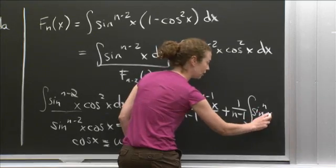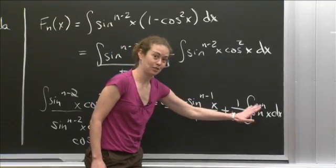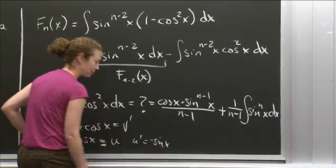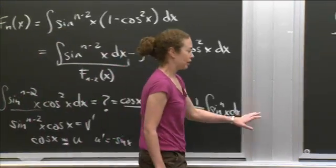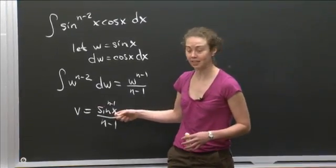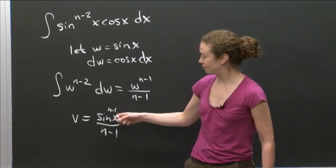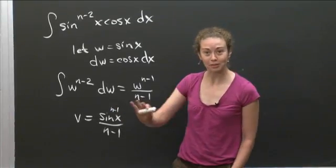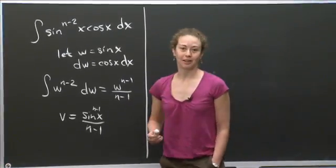Let's make sure we agree with the power. u prime is negative sine x, and v is sine x to the n minus 1 over n minus 1. So u prime v has the nth power of sine — giving the integral of sine x to the n. That's a little nerve-racking, but we're actually headed in the right direction.